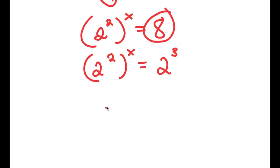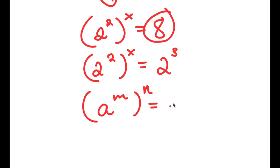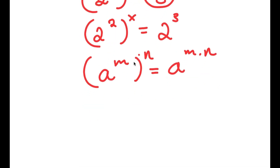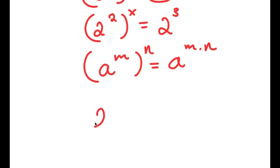If I have something in the form a to the power of m to the power of n, this is equal to a to the power of m times n. So 2 squared to the power of x becomes 2 to the power of 2x, and this is equal to 2 to the power of 3.